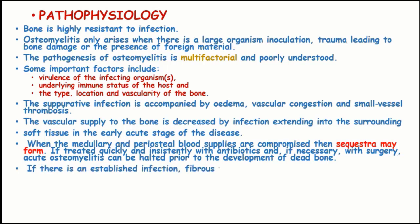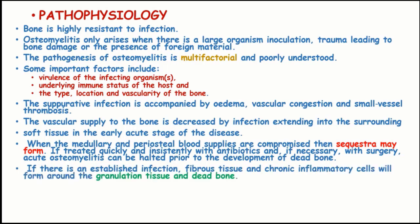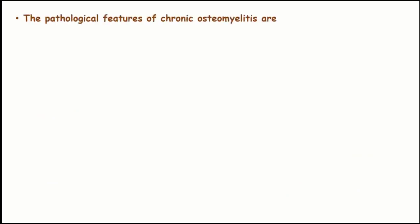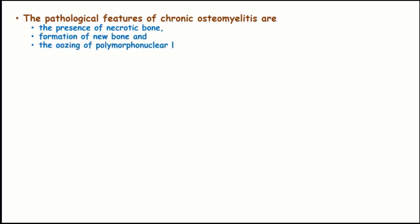If there is an established infection, fibrous tissue and chronic inflammatory cells will form around the granulation tissue and the dead bone. Early and specific treatment is important in osteomyelitis, and identification of the causative microorganism is essential for antibiotic therapy. The pathological features of chronic osteomyelitis are the presence of necrotic bone, formation of new bone, and the oozing of polymorphonuclear leukocytes.